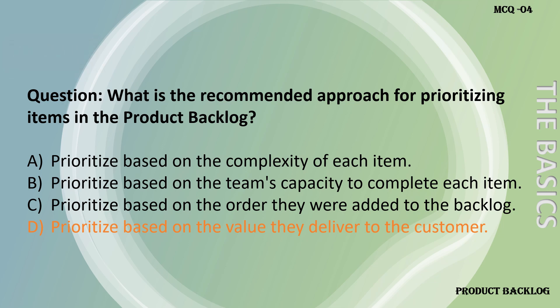The answer is D: prioritized based on the value they delivered to the customer. The recommended approach to prioritizing product backlog items is based on the value delivered to the customer. Agile projects prioritize items that provide the most value and benefit to the customer or end user, ensuring early delivery of high-value items and aligning with the agile principle of delivering working software frequently.